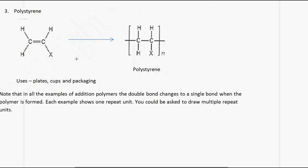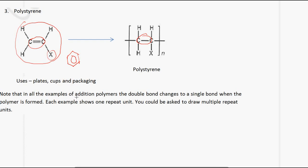The third example is polystyrene. The monomer has a double bond, and attached to it is an X, which represents a benzene ring — though at the CSEC level you don't need to know the details of the benzene ring. Again, the double bond disappears and becomes a single bond. In all examples of addition polymers, the double bond changes into a single bond when the polymer is formed.